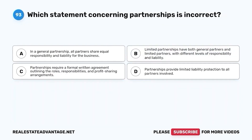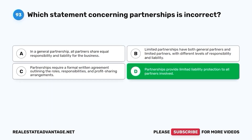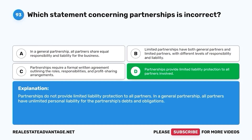Question 93. Which statement concerning partnerships is incorrect? A. In a general partnership, all partners share equal responsibility and liability for the business. B. Limited partnerships have both general partners and limited partners, with different levels of responsibility and liability. C. Partnerships require a formal written agreement outlining the roles, responsibilities, and profit-sharing arrangements. D. Partnerships provide limited liability protection to all partners involved. The correct answer is D. Partnerships do not provide limited liability protection to all partners. In a general partnership, all partners have unlimited personal liability for the partnership's debts and obligations.